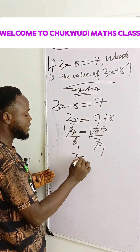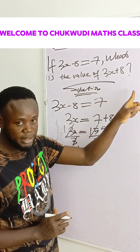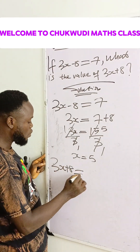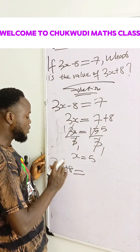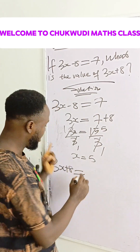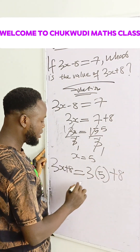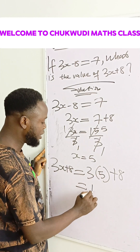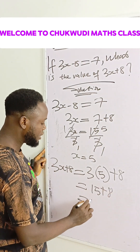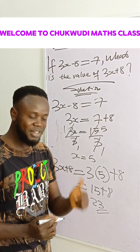Therefore x is equal to 5. We are looking for the value of 3x plus 8, so substituting x with 5: 3 times 5 plus 8 equals 15 plus 8, which equals 23. That is our final answer. Thank you.